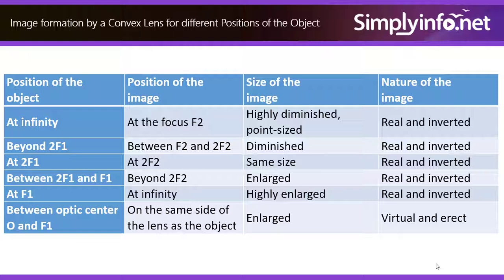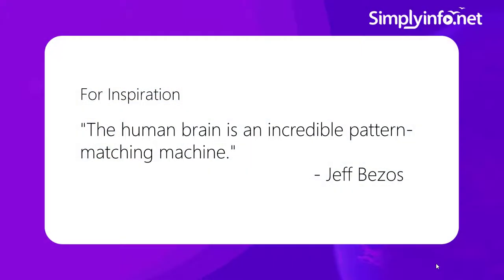Between optic center O and F1, image forms on the same side of the lens as the object, enlarged, virtual and erect in nature.